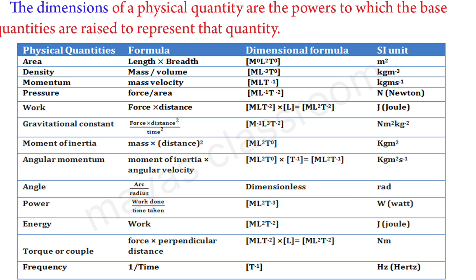Other quantities include: gravitational constant, moment of inertia, angular momentum, power, torque, and frequency. Frequency has dimension T⁻¹. Some quantities like angle, relative density, and strain are dimensionless — they have no units.